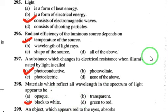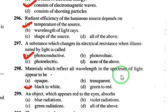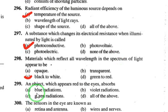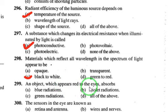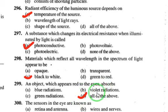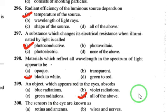An object which appears red to the eye reflects red radiation and absorbs all remaining radiations — violet, blue, and green. So the answer is 'all of the above' for this question.